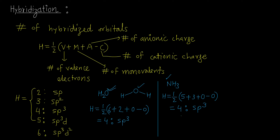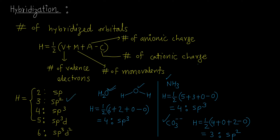Next, the carbonate ion CO₃²⁻. The central atom is carbon. v = 4 (valence electrons of carbon, configuration 2,4), m = 0 (oxygen is divalent, not monovalent), a = 2 (charge is 2−), c = 0. So H = ½(4 + 0 + 2 − 0) = ½ × 6 = 3. Three hybridized orbitals means the hybridization is SP2.